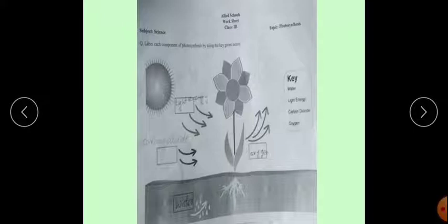Label each component of photosynthesis by using the key given below. This is the key: water, light energy, carbon dioxide, and oxygen.